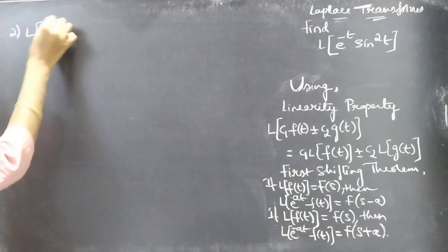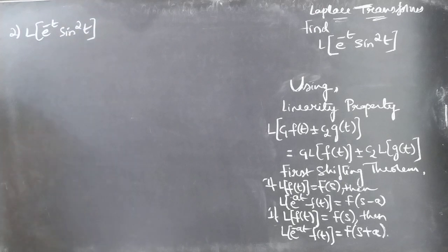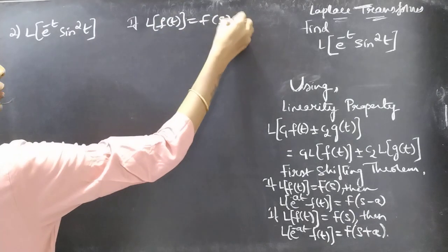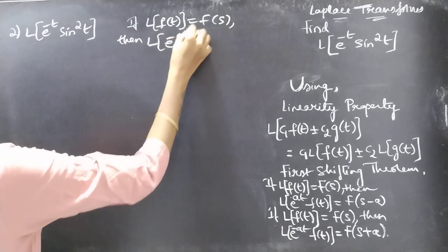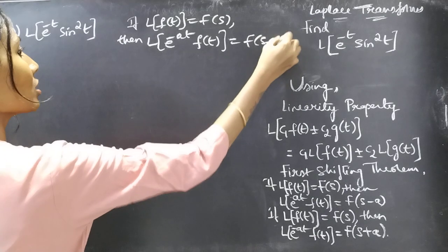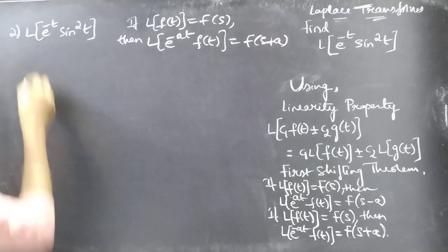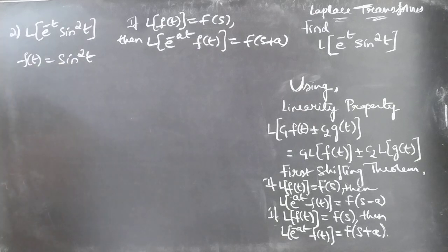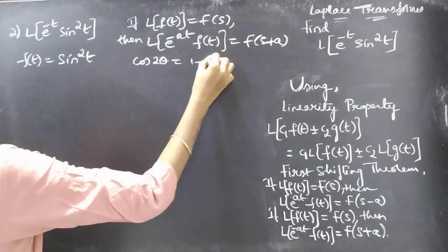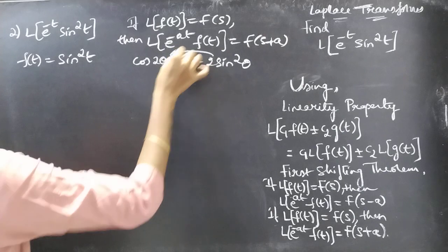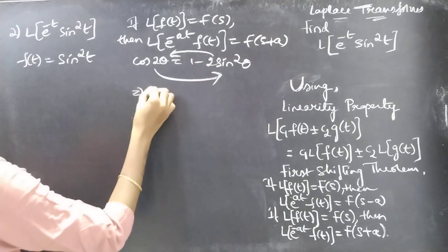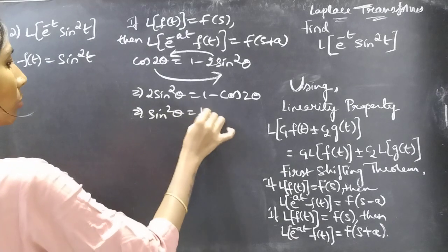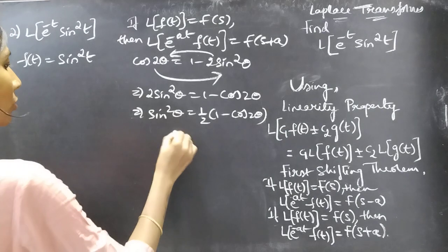Now let's see the other way using the first shifting theorem. We know that if L of f(t) equals F(s), then L of e to the power minus at times f(t) equals F(s plus a). Just by comparing, we'll have f(t) equal to sine squared t. Since we know cos 2θ equals 1 minus 2 sine squared θ, we get 2 sine squared θ equals 1 minus cos 2θ, and then sine squared θ equals 1 by 2 into 1 minus cos 2θ.